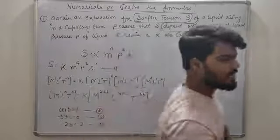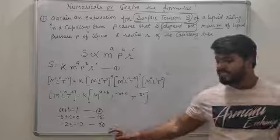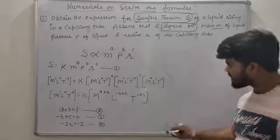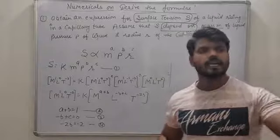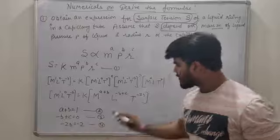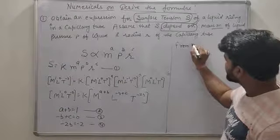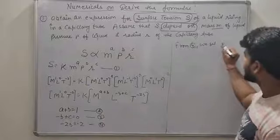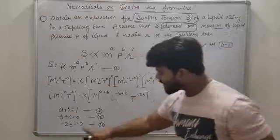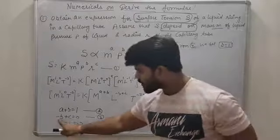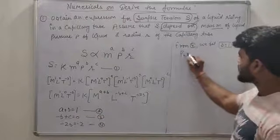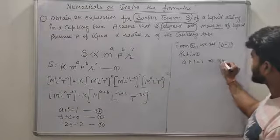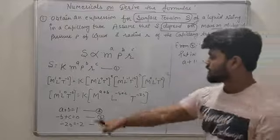आपको कुछ नहीं करना — mathematics के ज़रिए solve these equations and find the value of A, B and C। सबसे पहले वो equation solve करनी है जो direct values देती है। From fourth equation: minus cancel होगा, B की value 1 आएगी। B की value put करने पर A की value 0 आएगी, यानि 1 minus 1 = 0।